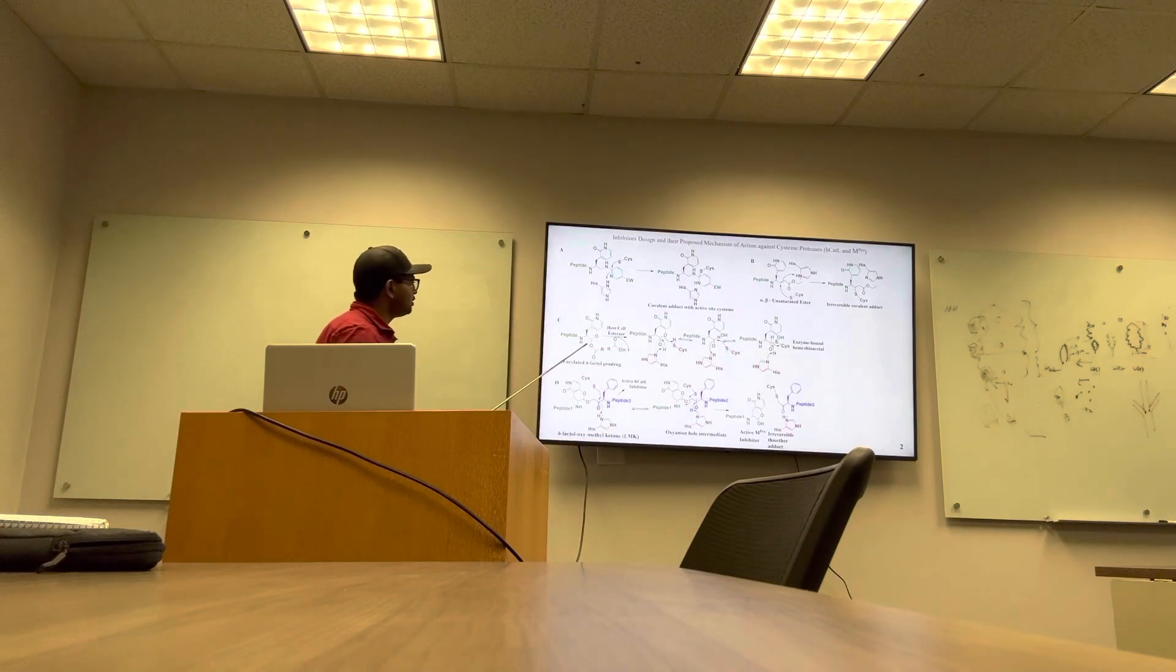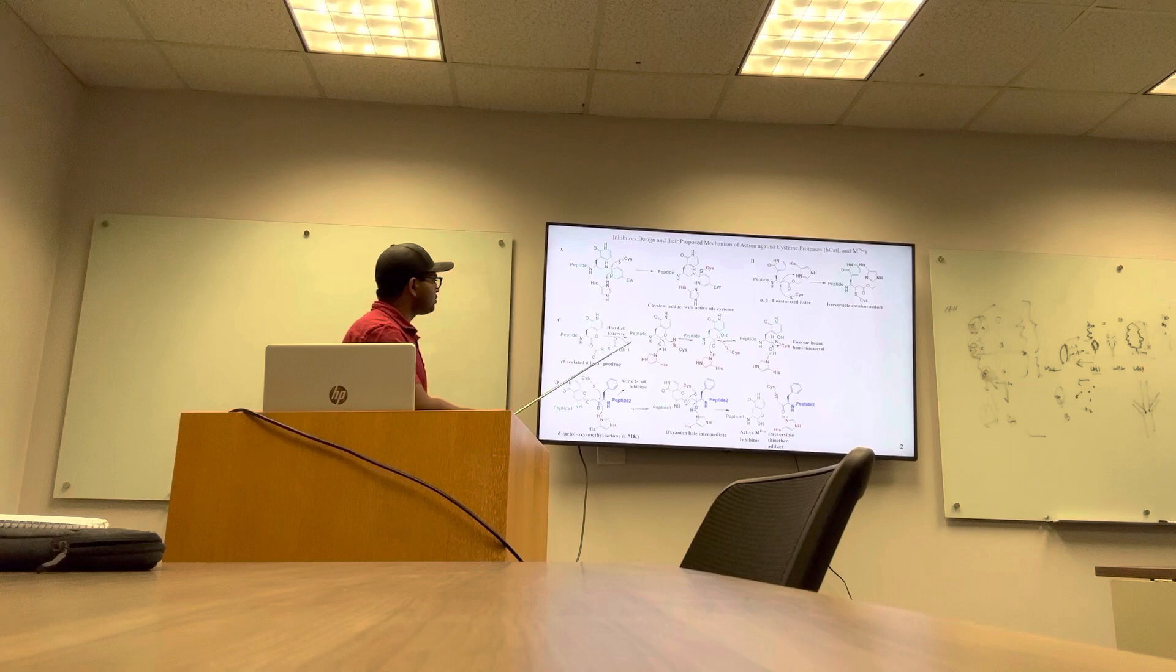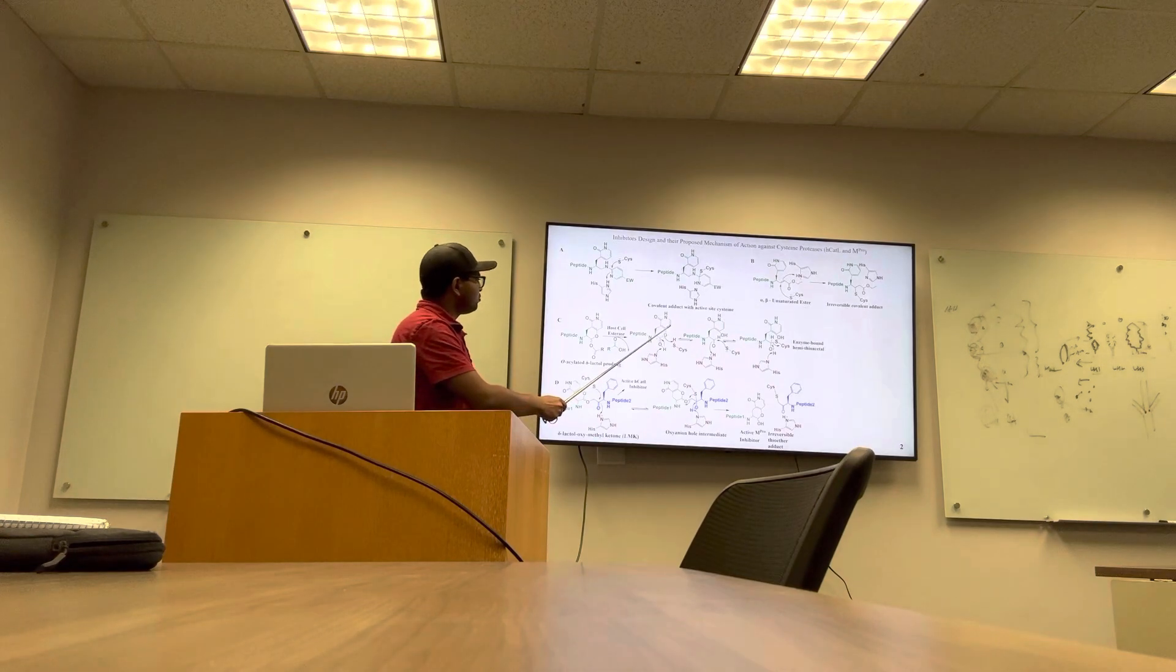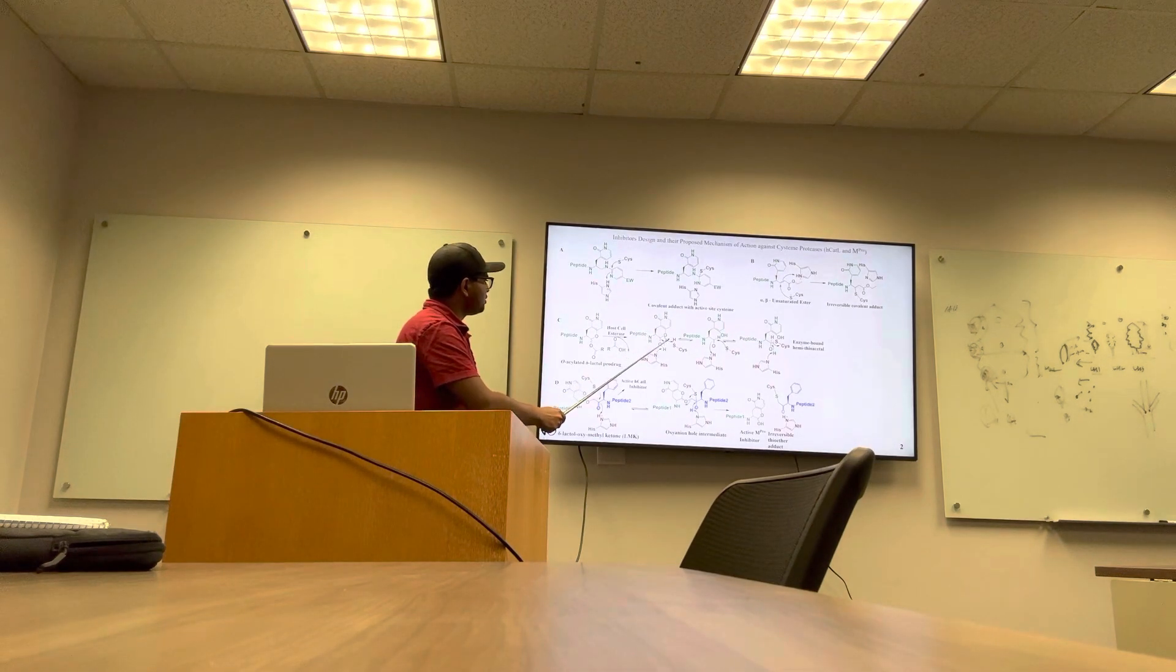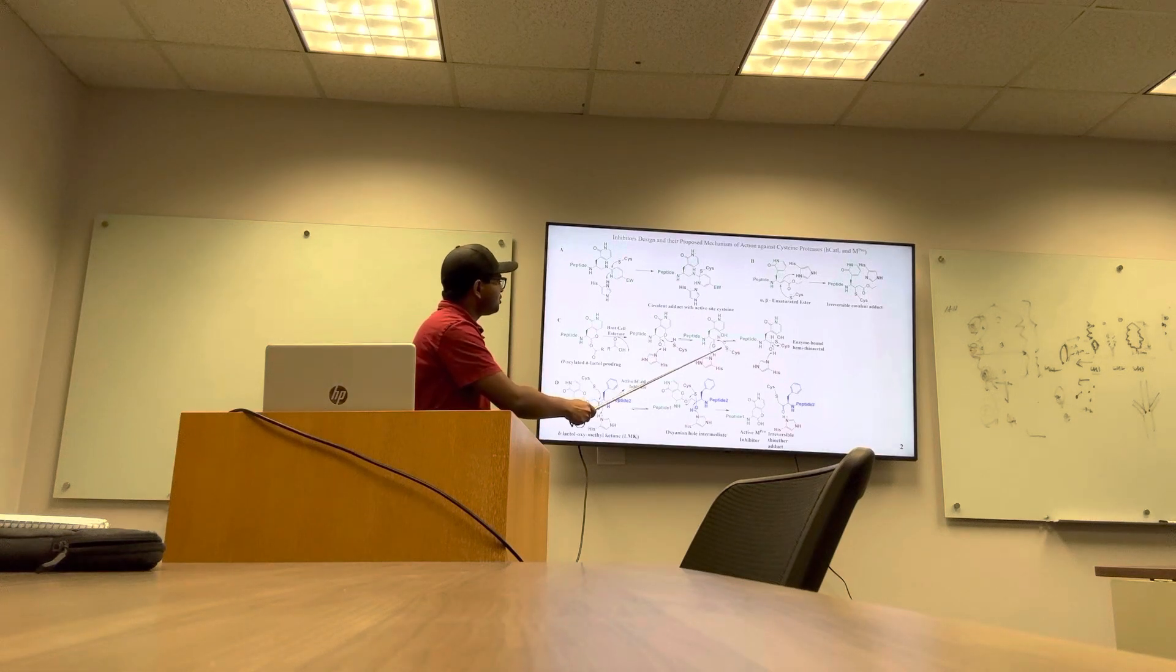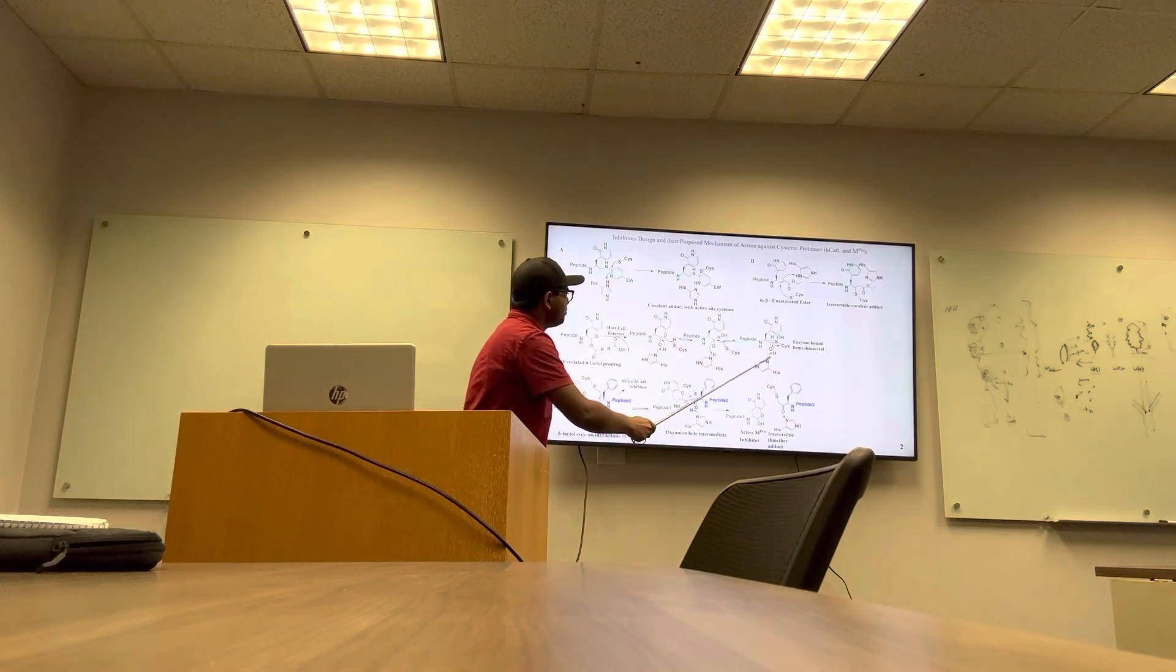Third is acylated delta-lactols. These are prodrugs of delta-lactols. When they internalize in cells, they use the activity of host cell esterase to convert them into active delta-lactone based drugs. Our lab showed that when delta-lactone based inhibitors bind to their target cysteine-protease, they undergo cysteine-catalyzed ring opening of delta-lactols to form reversible hemithioacetal.